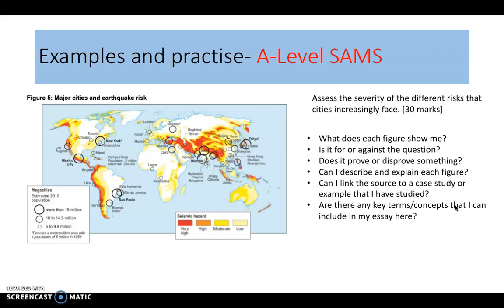Let's look at this one together. This figure shows major cities and earthquake risk. There's a colour code from red — very high — to yellow — very low — and the size of the circles represents the estimated 2010 city populations. The world map shows how these are distributed around the world. So assessing the severity of risks cities increasingly face: it shows that lots of cities are in areas with high seismic risk, but also that some quite large cities are in areas of quite low seismic risk.